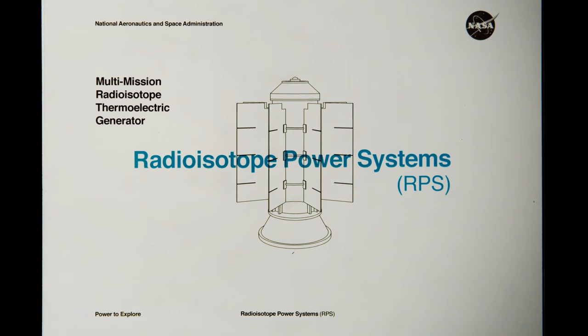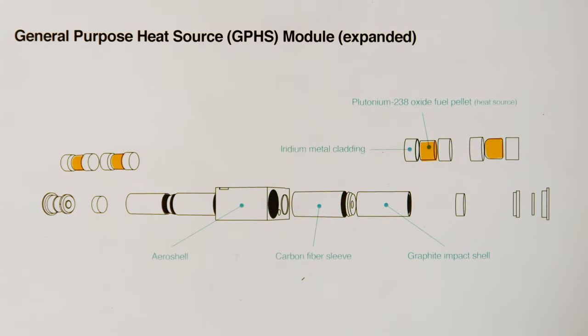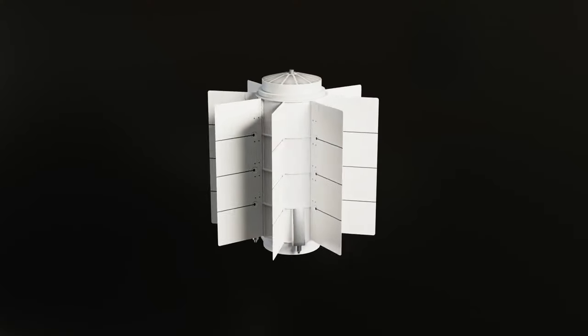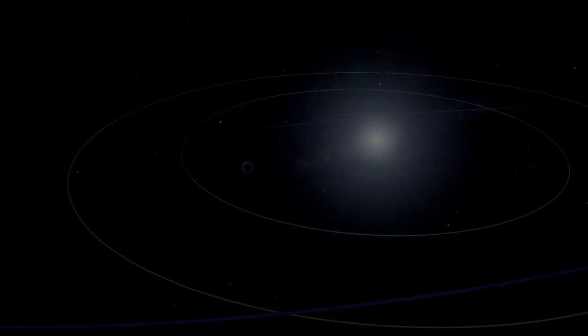Radioisotope power systems help NASA do exactly that. RPS can power a spacecraft for decades with no sunlight. They're like a nuclear battery, using heat to generate electricity.